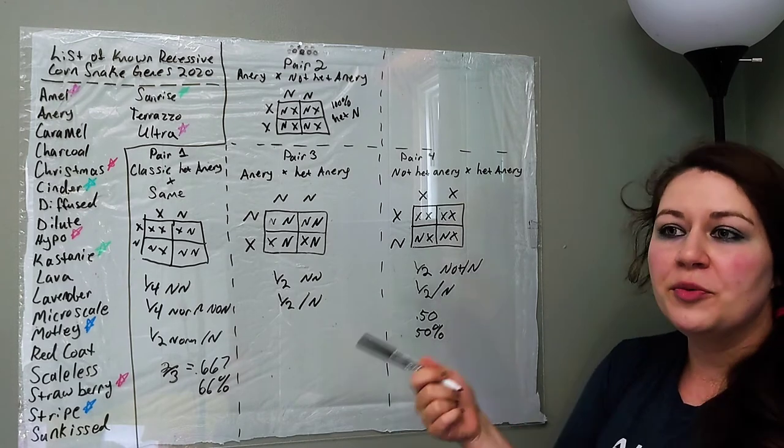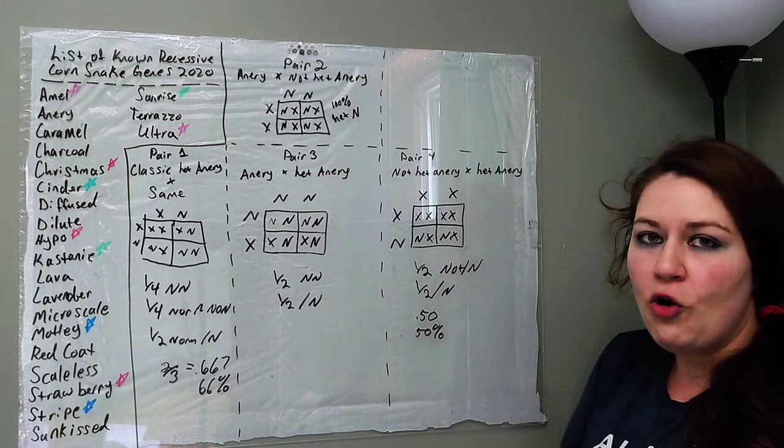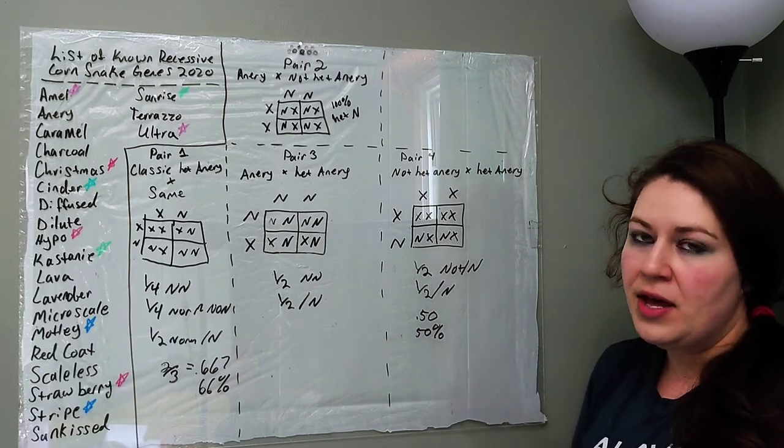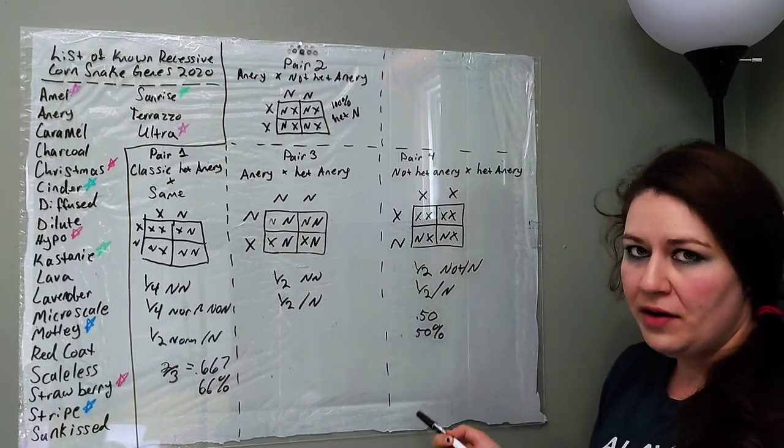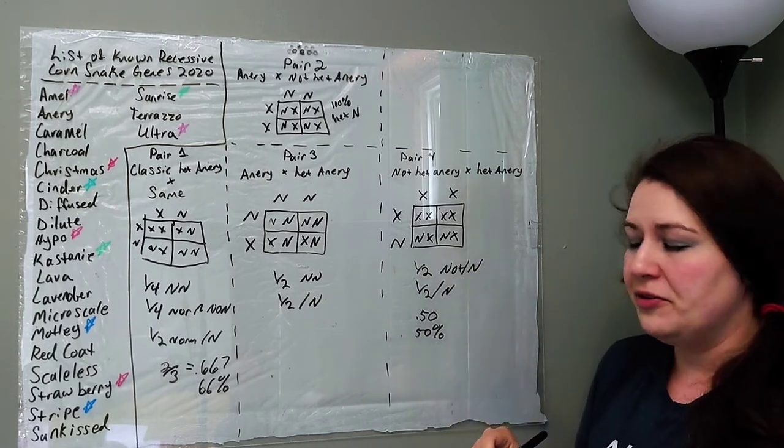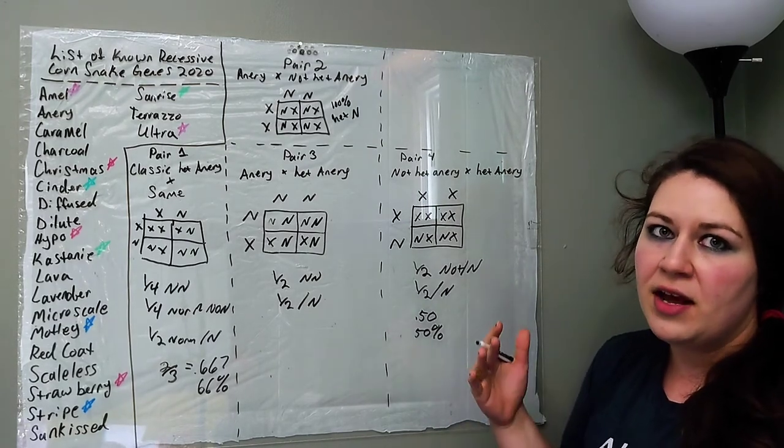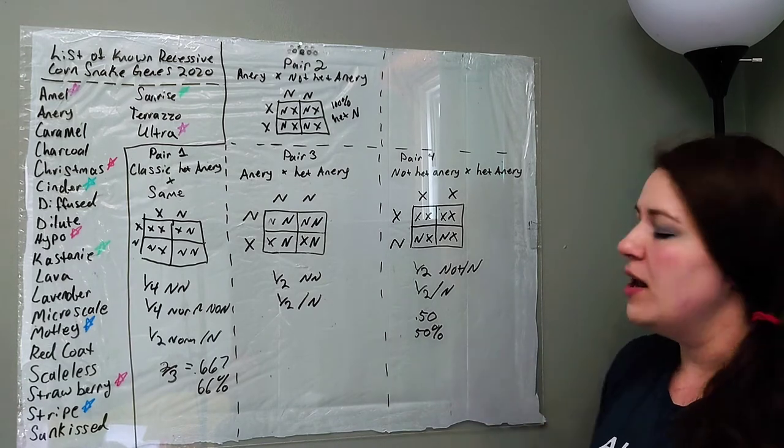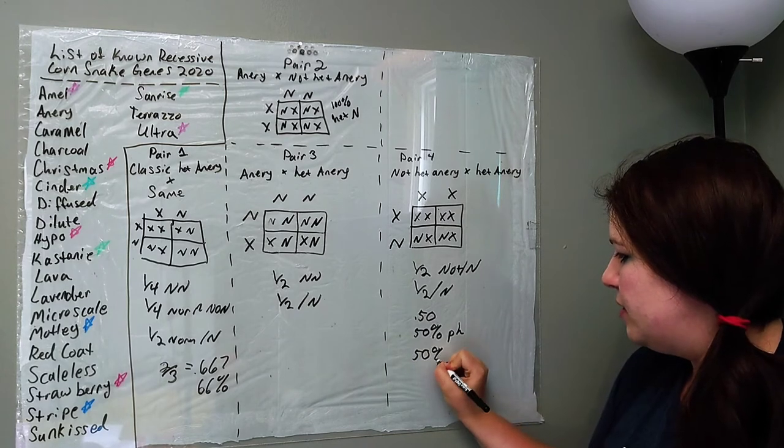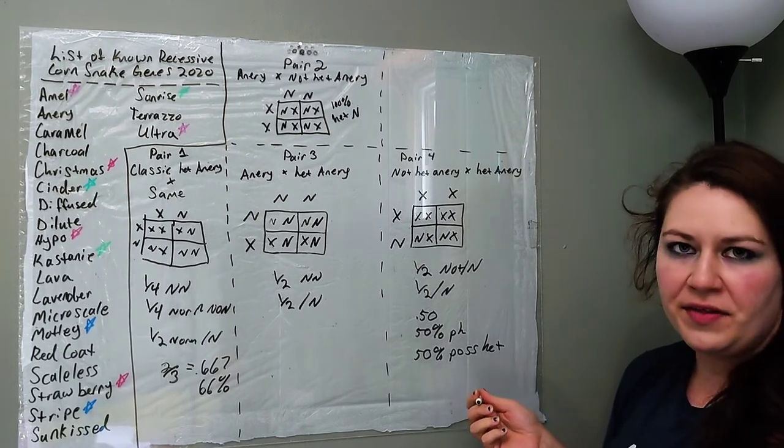So when you have a snake where you breed, let's say you know you have a het anery, and you're breeding it to a normal to find out if that normal is het anery. If you get a whole bunch of normals and no aneries, you can pretty much bet that the one you were testing is not het anery. If that's the case, all of its offspring have a 50% chance of being het anery because one parent carried the anery gene. But since you don't know which one it is, you label all offspring as 50% chance of having that gene, 50% possibly het. A lot of people will write it out as this, ph, or 50% pos het, something like that. You get the idea.